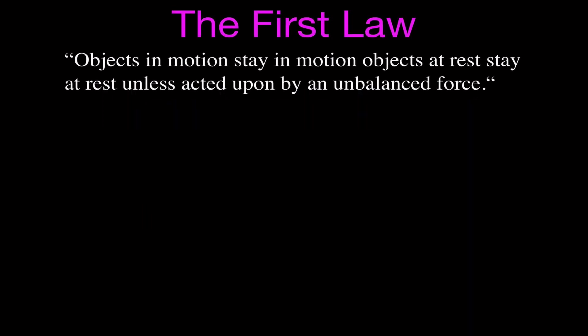This is Newton's Laws of Motion, and there are three Laws of Motion. They are simply referred to as the first law, the second law, and the third law. Newton's first law of motion says that objects in motion stay in motion — they're going to keep moving with the same speed in the same direction. Objects in motion stay in motion, and objects at rest stay at rest, unless acted upon by an unbalanced force.